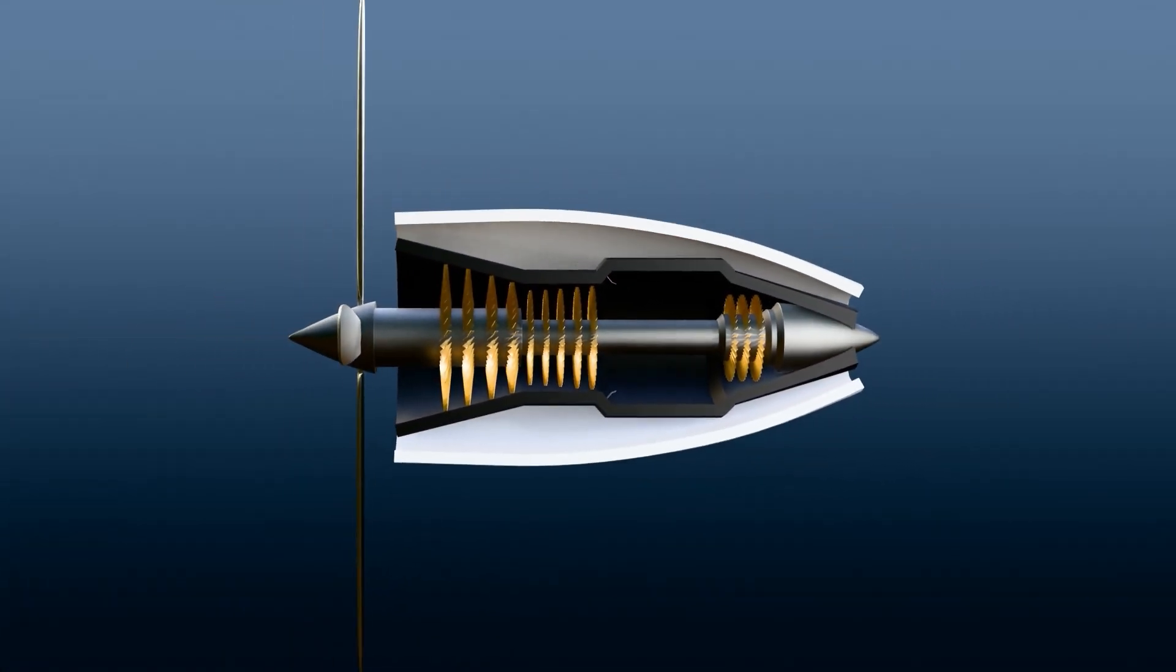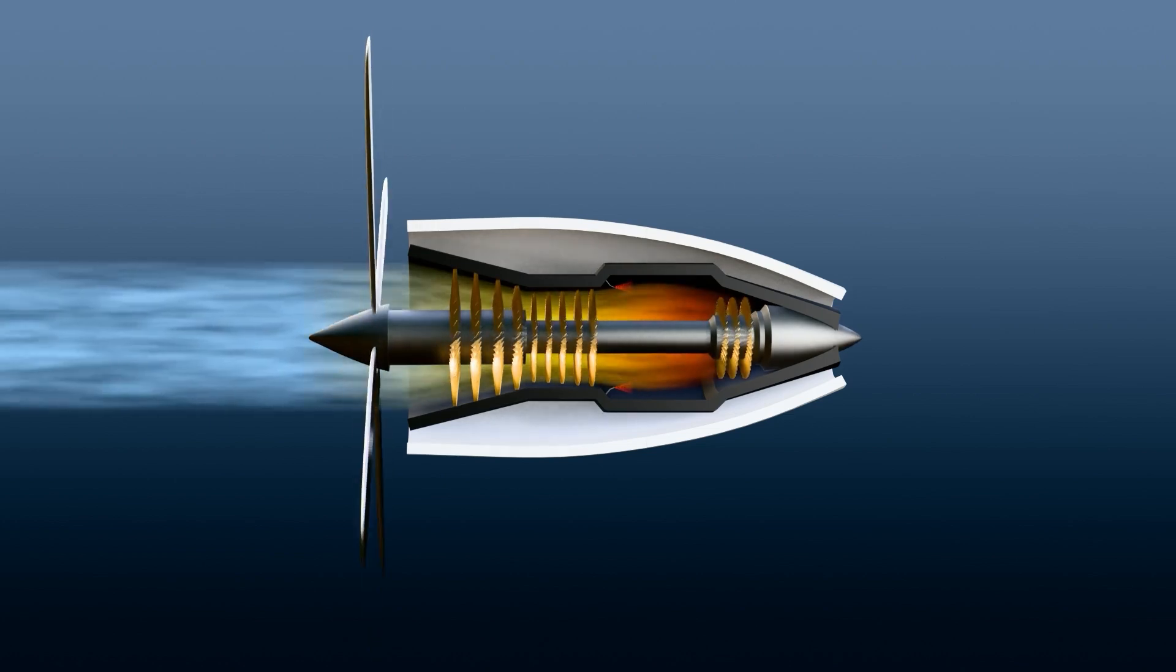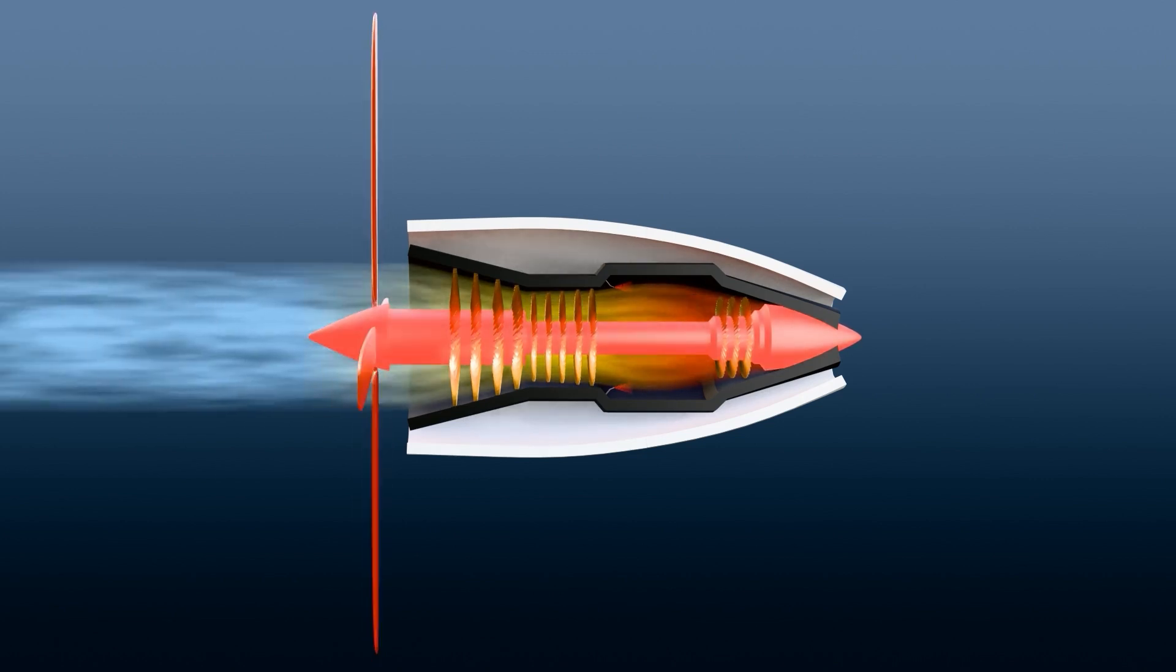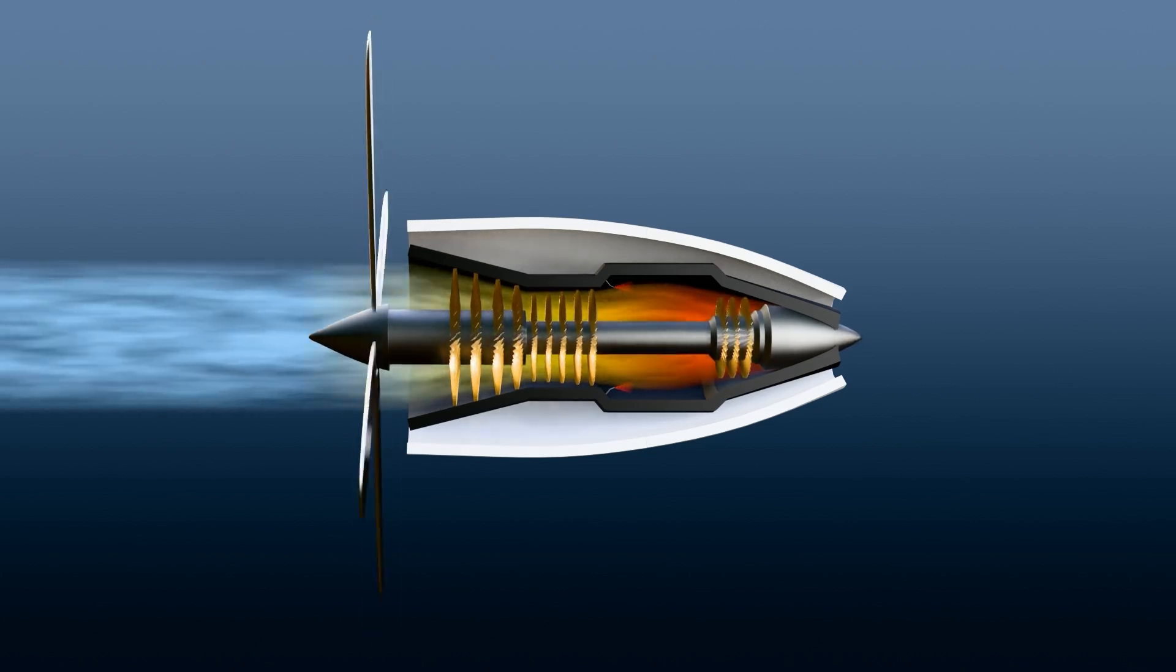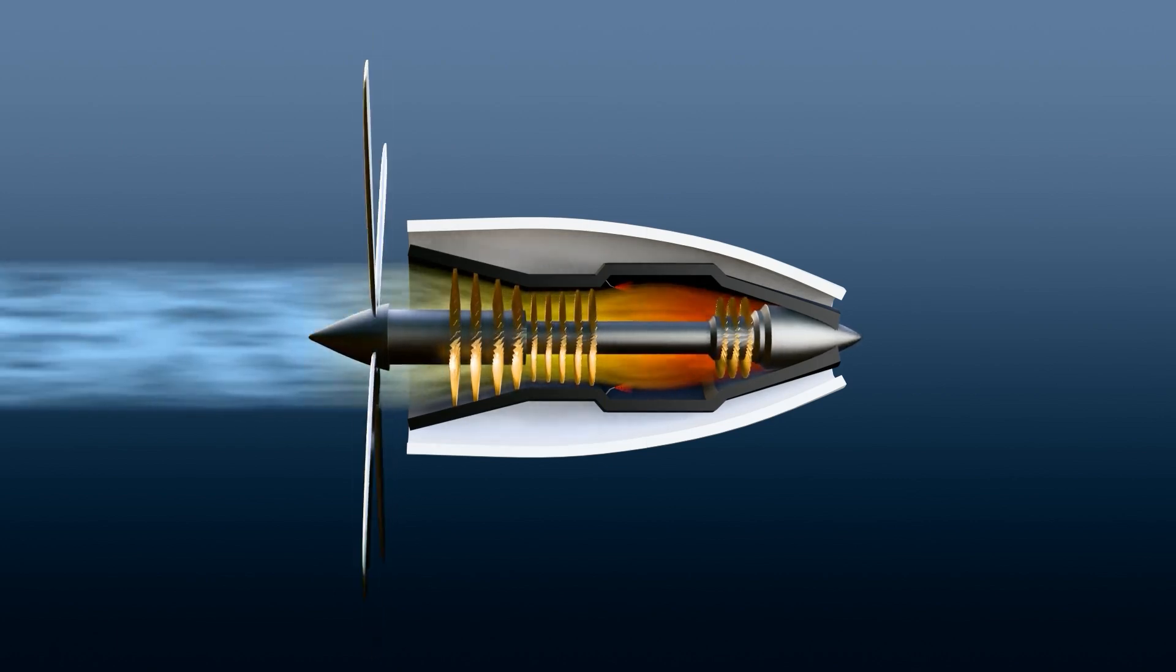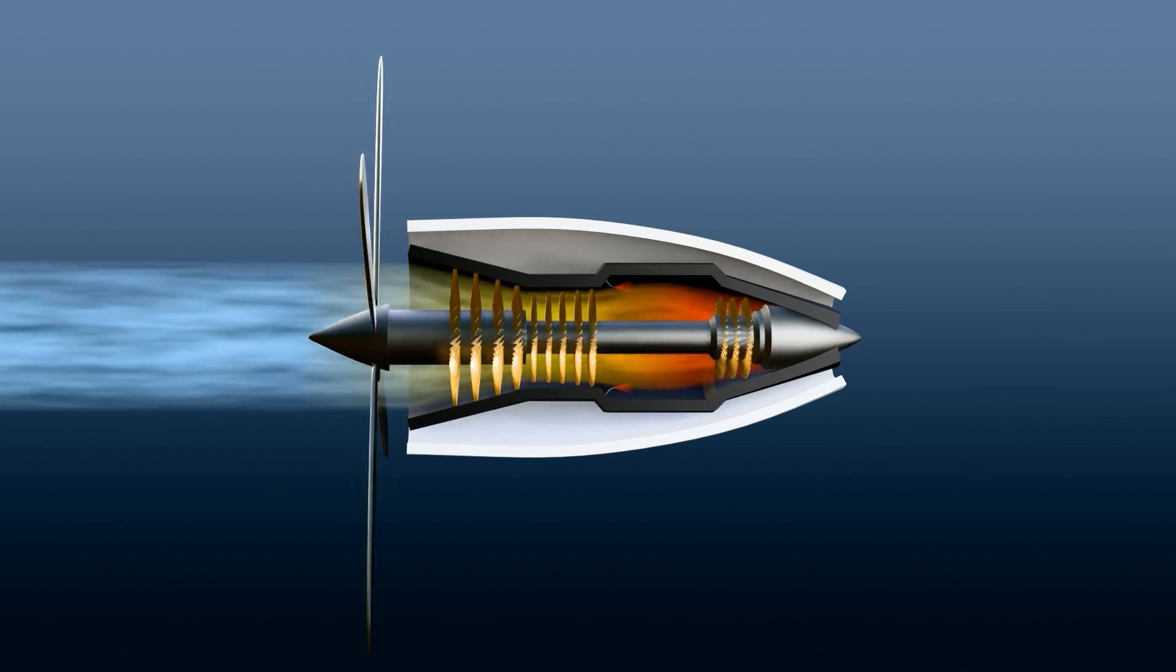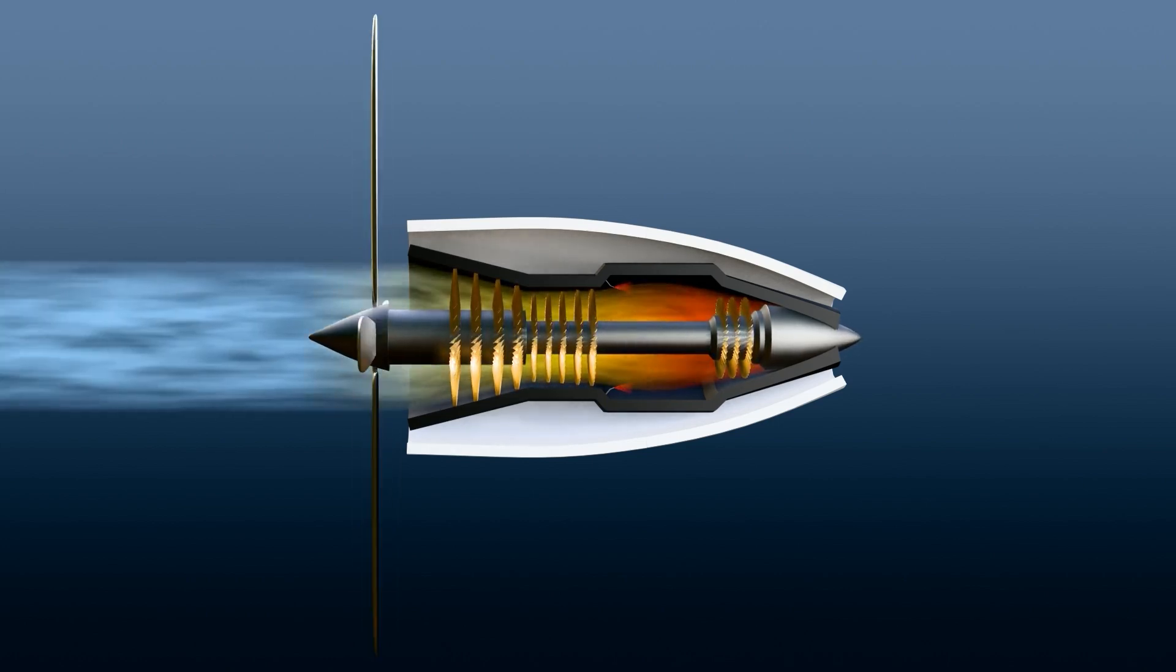A turboprop engine is a type of jet engine that drives a propeller. In this design, most of the energy produced during combustion is directed to a turbine, which drives a shaft connected to a large propeller. Unlike turbojets, which rely on fast exhaust to create thrust, turboprop engines use the propeller for propulsion. This design works well for short flights at low altitudes, where high speeds aren't necessary. It also offers better fuel efficiency and more power compared to older piston engines.